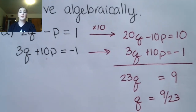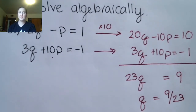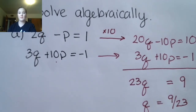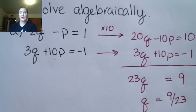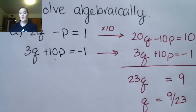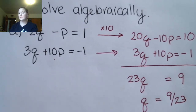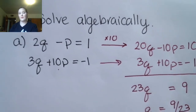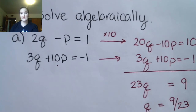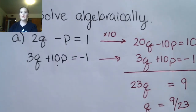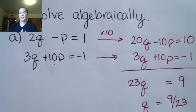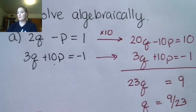Now I'm going to combine them: 20q plus 3q is 23q. Negative 10p plus positive 10p is 0 — that's the elimination part. 10 plus negative 1 is 9, so 23q equals 9. I'm going to divide and leave this in fraction form. Now I still have to find my value for p. For computational ease, it looks like it's going to be easier to solve for p in the first equation.